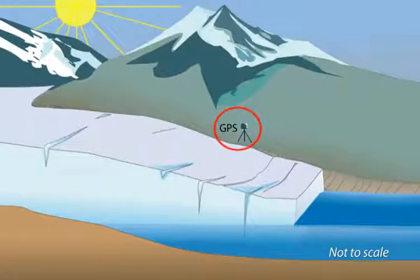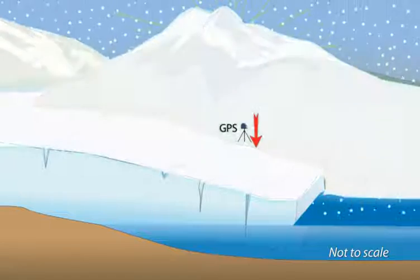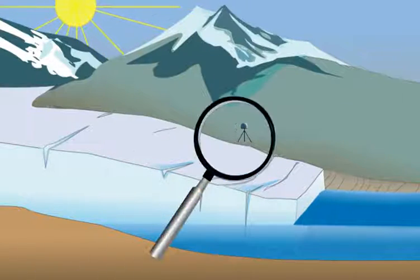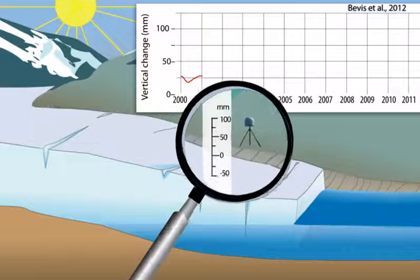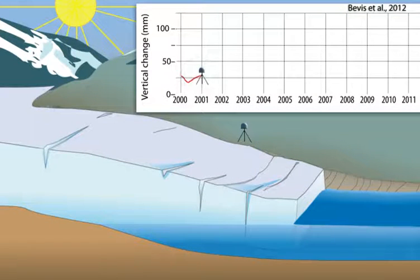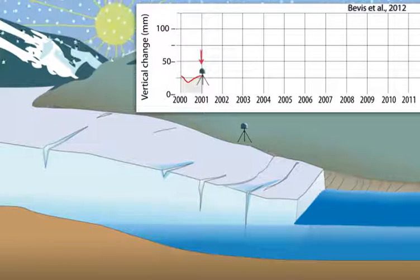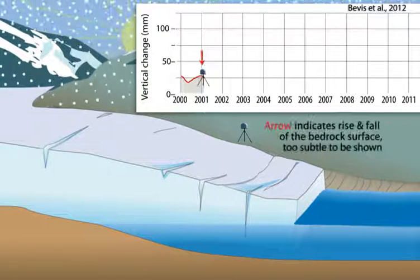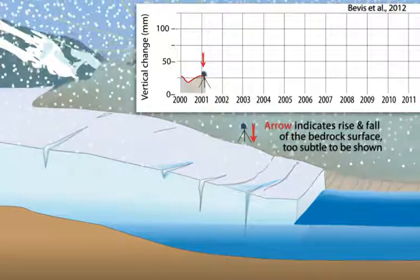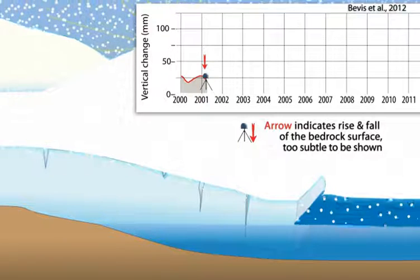When the glacier is thicker, the Earth's bedrock surface lowers. When the glacier is thinner, the bedrock surface rises. The graph in the upper right will illustrate how the vertical movement of the GPS receiver changes as the glacier gains and loses mass over time. In the winter, when two to four meters of additional snow can fall on Greenland glaciers, the bedrock surface lowers due to the additional weight.